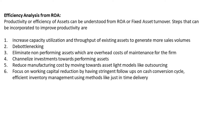Reducing manufacturing cost by moving towards asset-light models — such as outsourcing to low-cost firms — is another key step. Finally, focusing on working capital reduction through stringent measures on cash conversion cycles and high efficiency in inventory management using methods like just-in-time delivery is important. Automation is also a very significant factor in today's world of AI, which can drive efficiency in multitude of innovative ways.